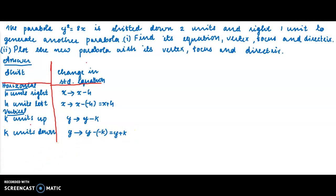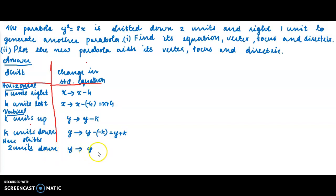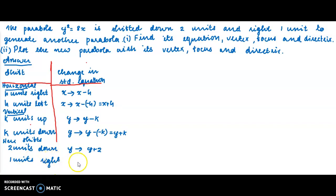For our parabola y² = 8x, the parabola is shifted 2 units down. Down means a vertical change, so y is replaced by y plus 2. The parabola is also shifted 1 unit right. Right means a horizontal change, so x is replaced by x minus 1.